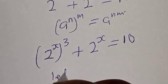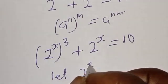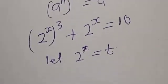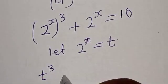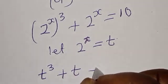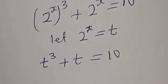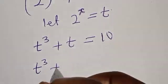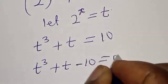Let 2 raised to power s equal t. Then we have t raised to power 3x plus t minus 10 is equal to 0.